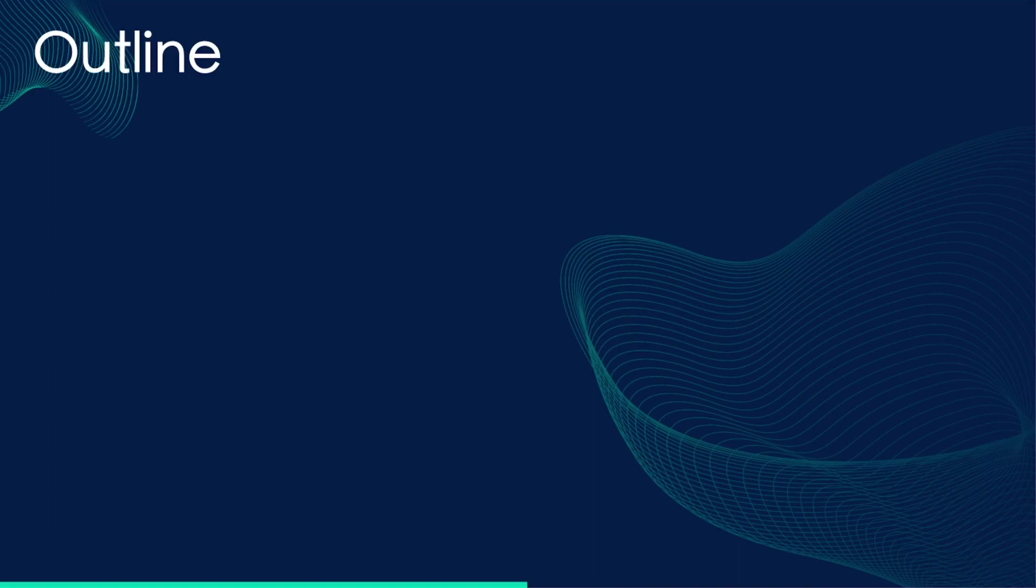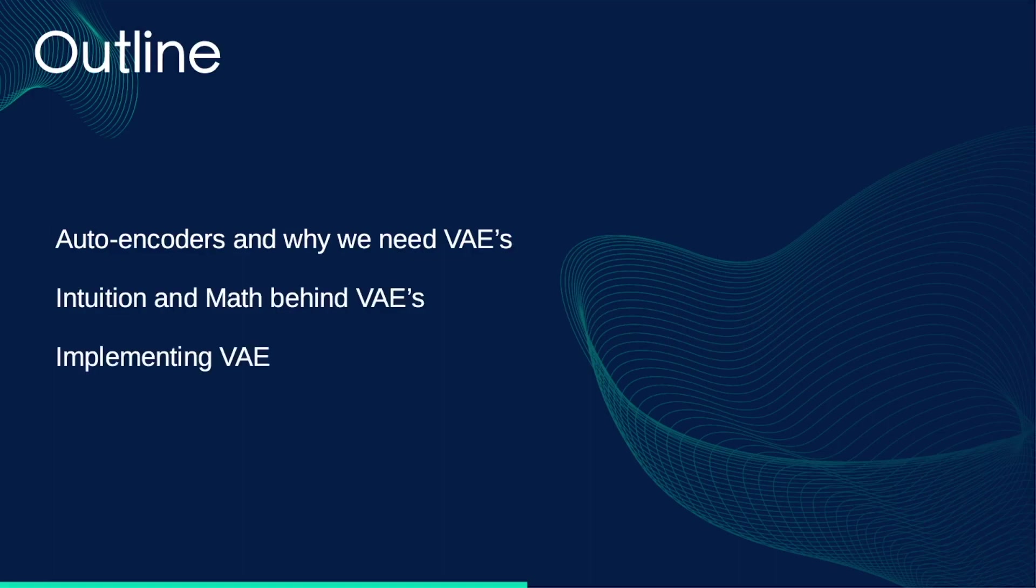The plan for the video is to first talk about autoencoders and why do we even need VAEs if autoencoders exist. We will then get into the intuition behind VAEs and the math which will guide us on how to exactly implement it. And finally, we'll have our VAE conditionally generate data.